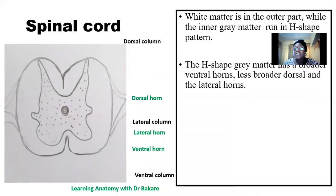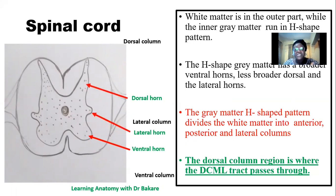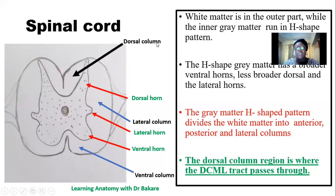Let's look at the general configuration of the spinal cord. The spinal cord is made up of white matter and gray matter. The entire outer region is the white matter and the central H-shaped region is the gray matter. This H pattern is further subdivided into different regions: the anterior region has the ventral horn, the lateral side has the lateral horn, and the posterior side has the dorsal horn. The white matter regions are the ventral column, the lateral column, and the dorsal column — and the dorsal column is where the first order neuron of the dorsal column medial lemniscal pathway passes through.